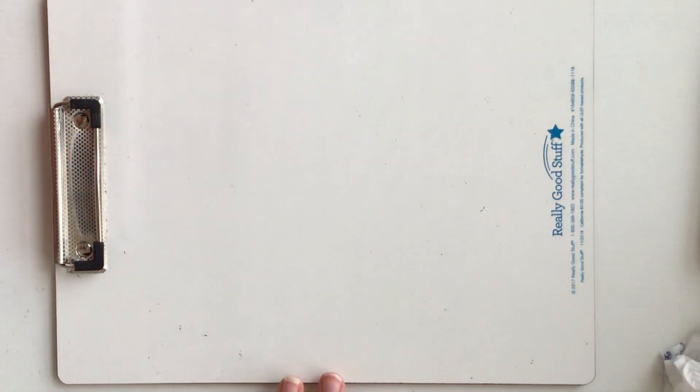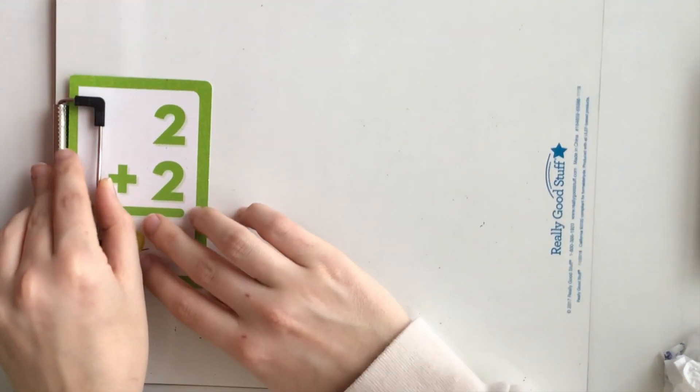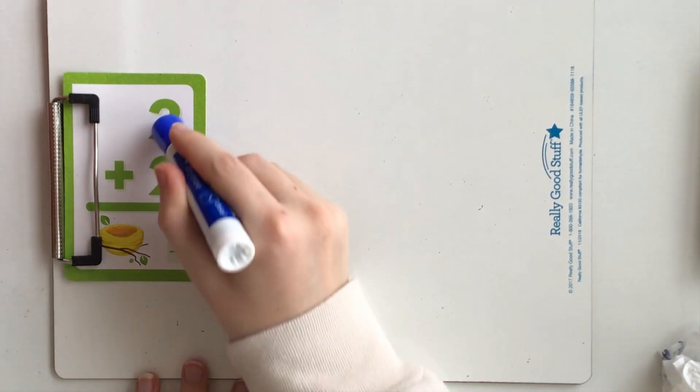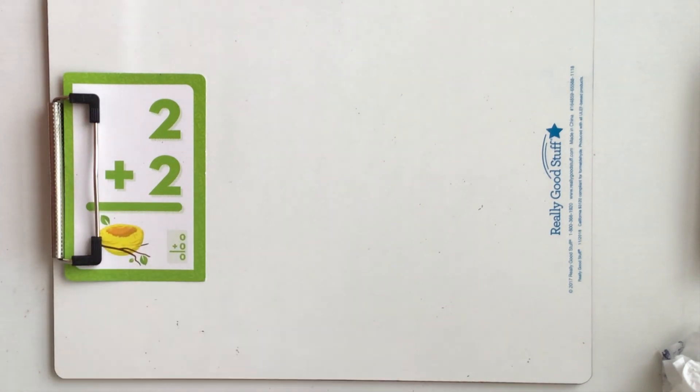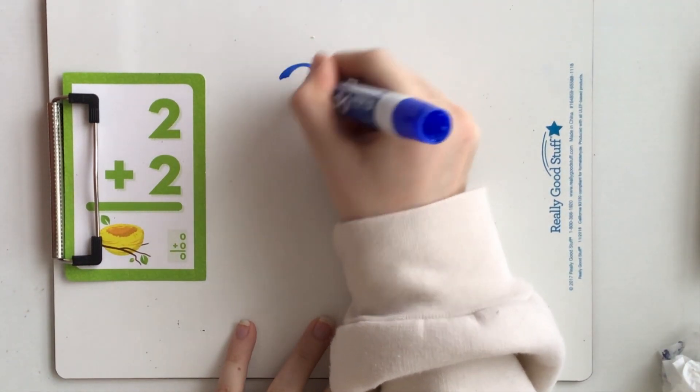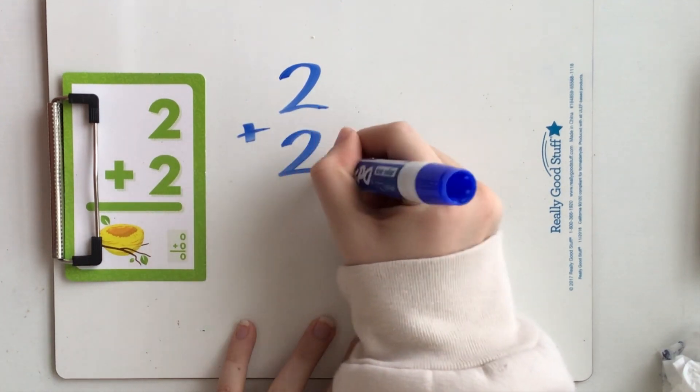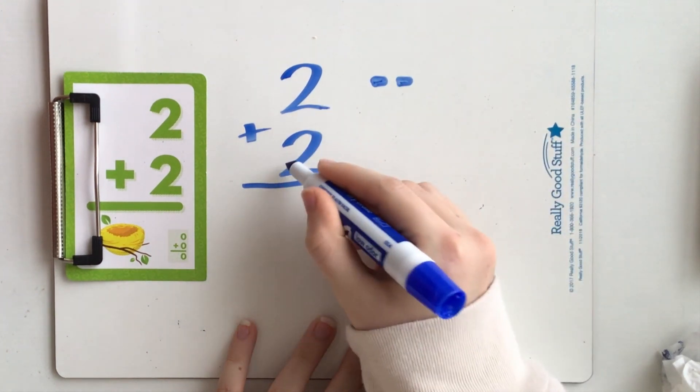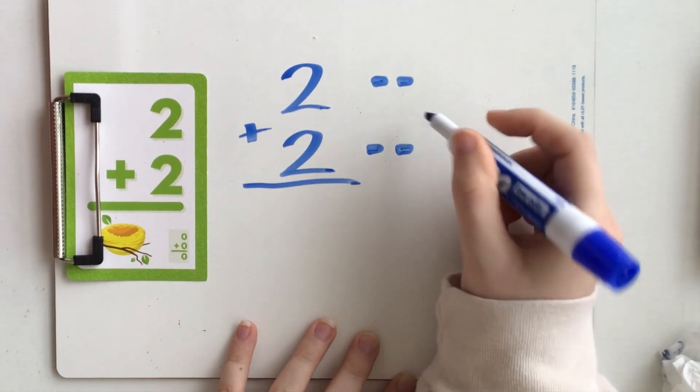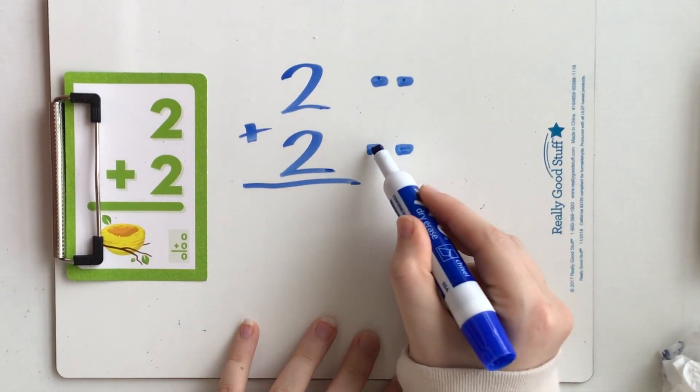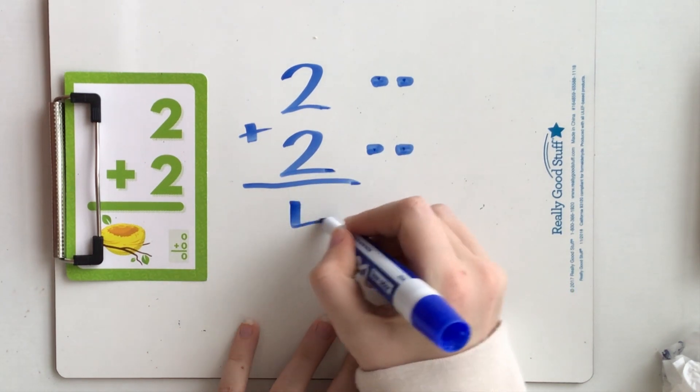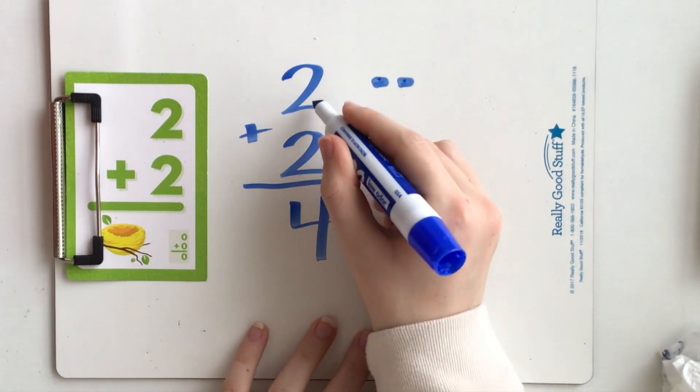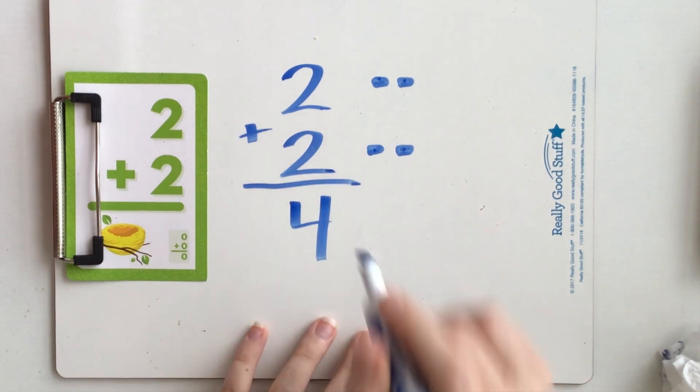Let's move on to the third problem. Two plus two equals. First I'll write it. Two dots here. Two dots here. One, two, three, four. Two plus two equals four.